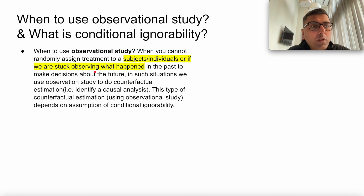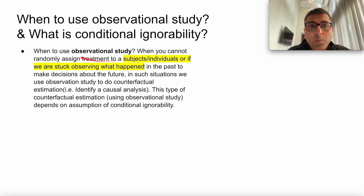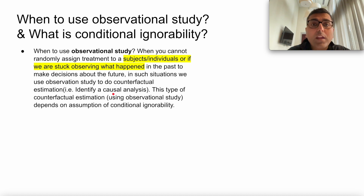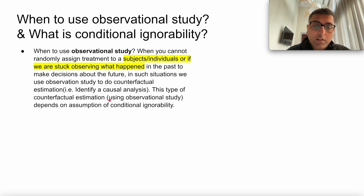The second example: let's say you're trying to find out how much wage hike to give your employees. You can't legally run an experiment where you discriminate using wage for various genders or protected classes. Legally, you cannot run such experiments. That's another example where observational study is useful — where you can't run an A-B test, or you're stuck with past data to make decisions for the future, and those decisions need to have a causal link.